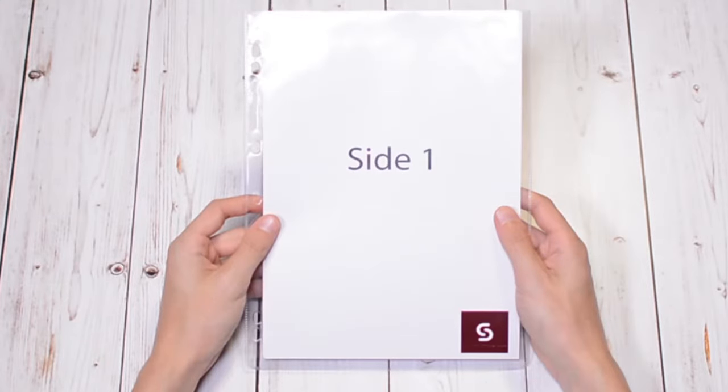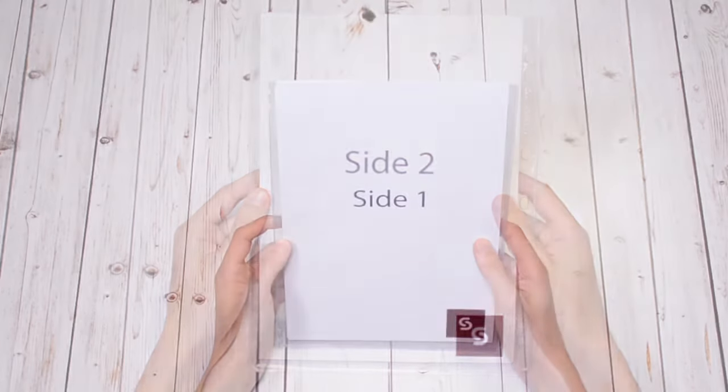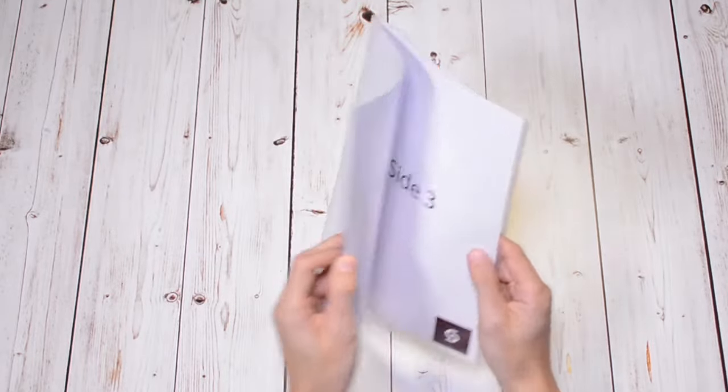Single PVC pockets display two sides of printed material. Double PVC pockets display four sides of printed material.